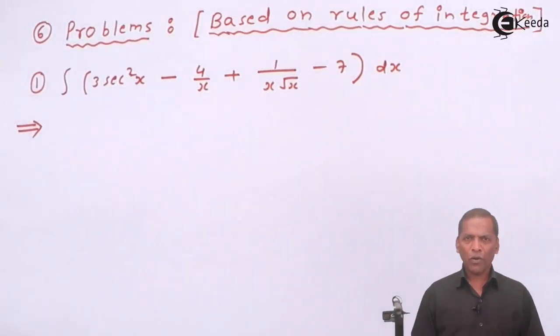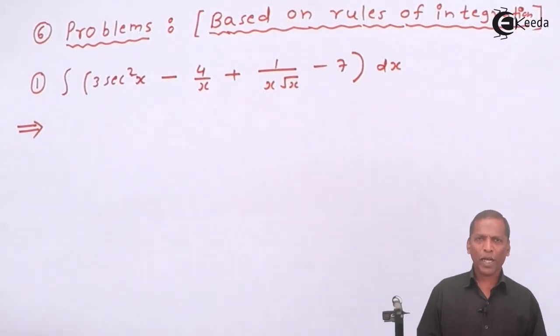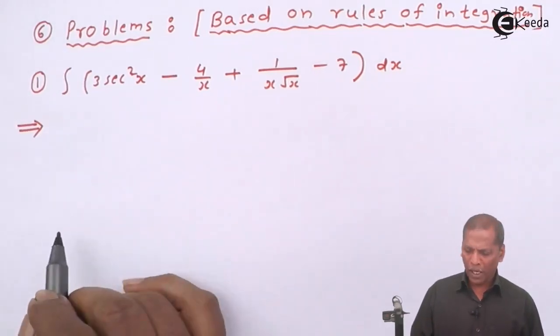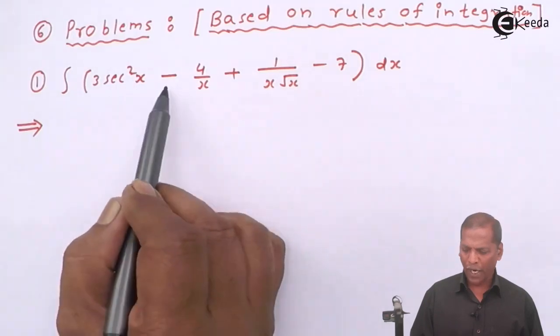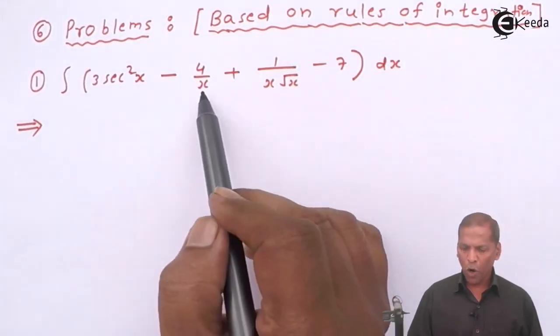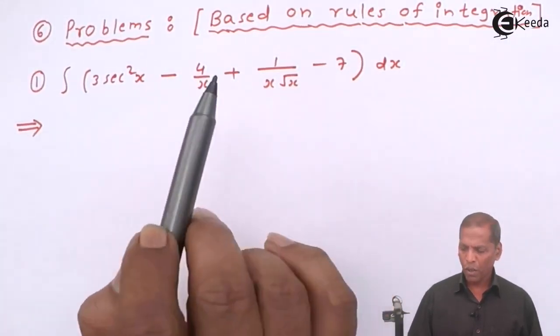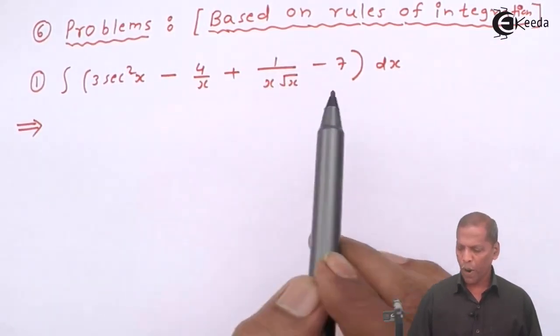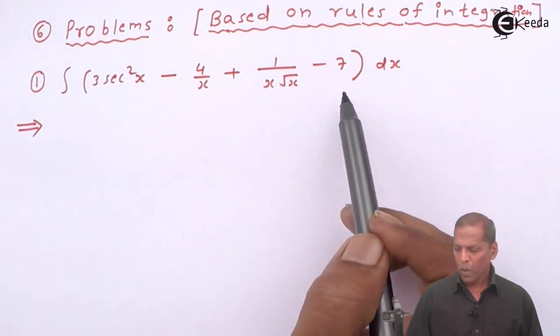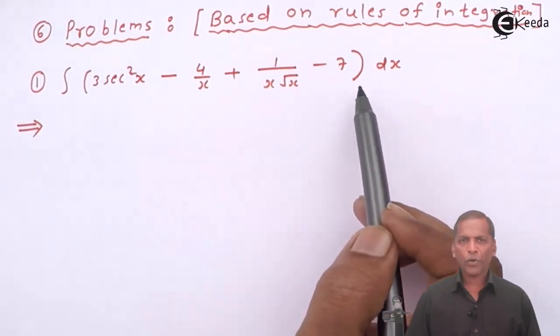First of all, we start with the first problem which is based on rules of integration. The problem number 1 is integral 3 into sec square x minus 4 upon x plus 1 upon x into root x minus 7, bracket complete, into dx.